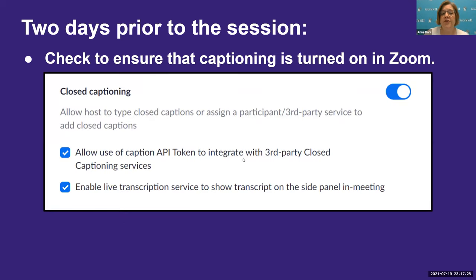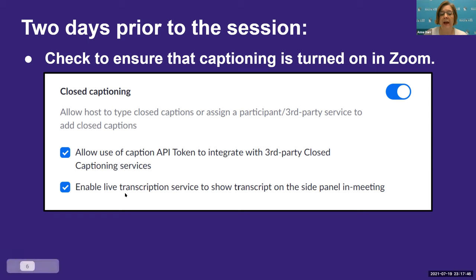You should also check to ensure that captioning is turned on in Zoom. To do so, you need to go into your settings, scroll down to captioning, and toggle the button so that it is blue. You want to allow the use of captions and enable live transcription if needed.